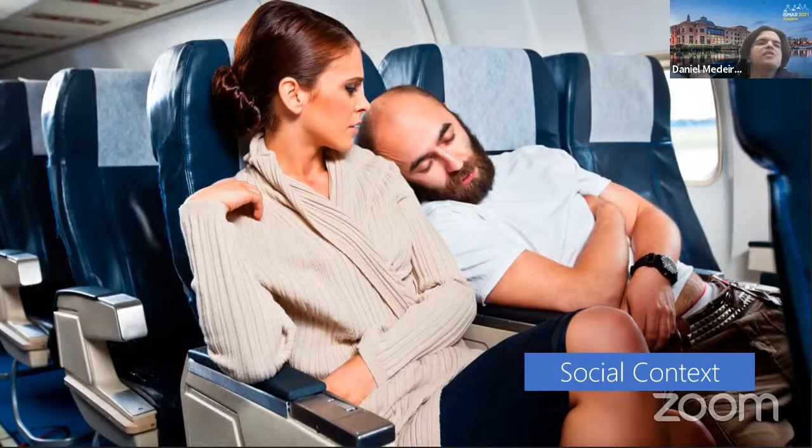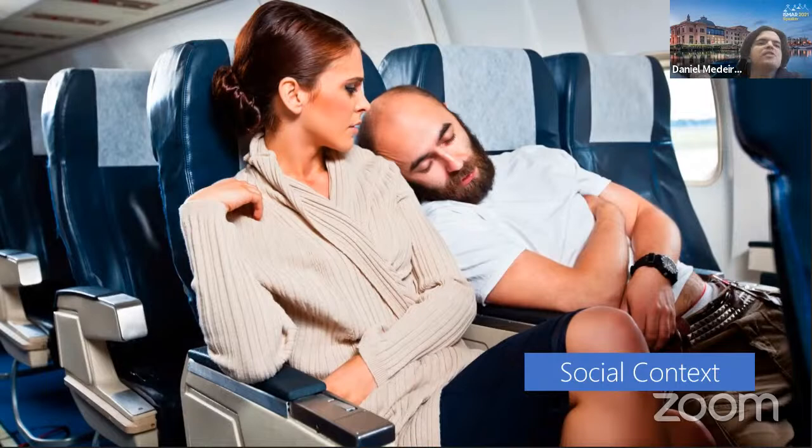AR virtual displays have been seen as effective and preferred as physical displays in recent studies about multi-display layouts. Users can easily rearrange virtual displays to adapt to their preferences. This is especially important in passenger contexts, as displays must consider not only the physical environment but also the social context — the people around them. The key question: how should we lay out virtual displays to best fit within the transit context?